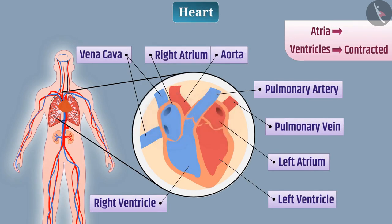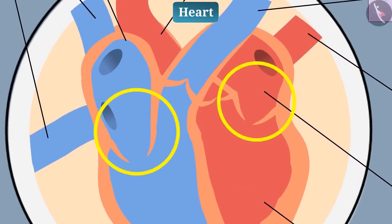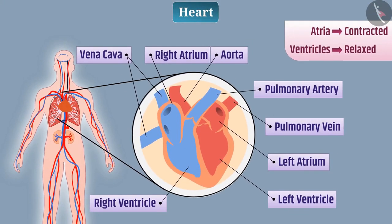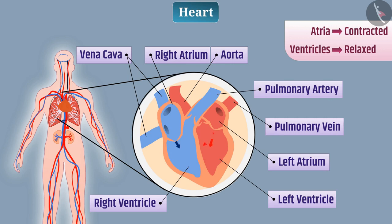When both atria contract and both ventricles relax, the valve between the atrium and ventricle opens. Oxygenated blood transfers from the left atrium to the left ventricle, and deoxygenated blood transfers from the right atrium to the right ventricle. The ventricle then pumps blood throughout the body, which is why the muscular wall of the ventricle is thicker than the wall of the atrium.